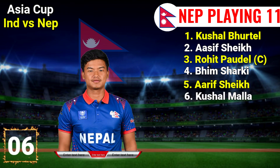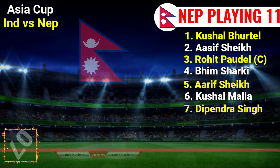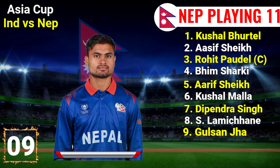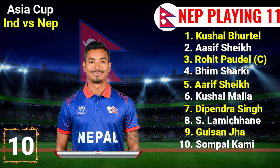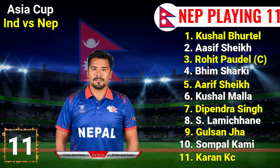No. 5 Arif Sekh, right hand batsman. No. 6 Kusal Mala, right hand all-rounder. No. 7 Dipender Singh, right hand all-rounder. No. 8 Sandeep Lamichane, right hand spinner. No. 9 Gulsan Jha, right hand fast bowler. No. 10 Sompal Kaim, right hand fast bowler. No. 11 Karan Kasi, right hand fast bowler.